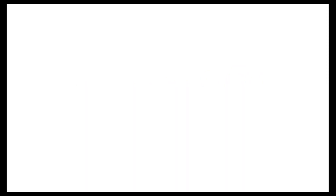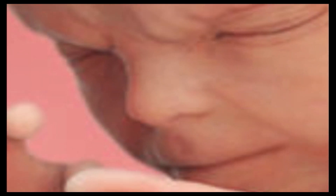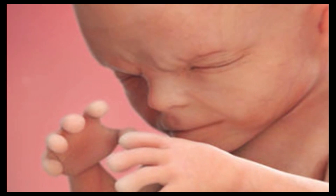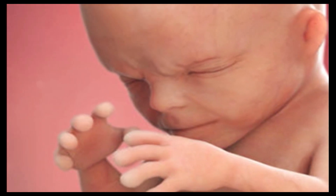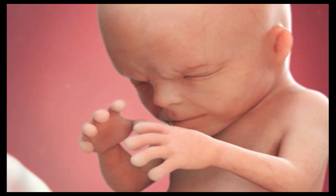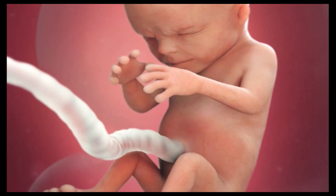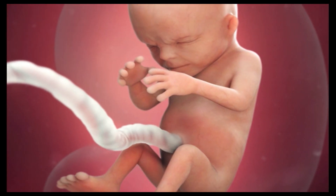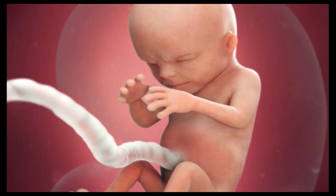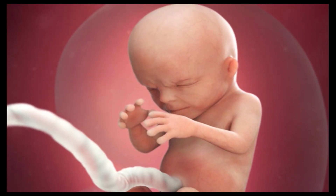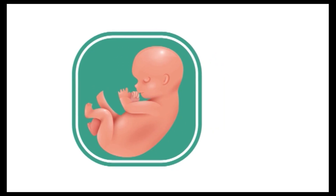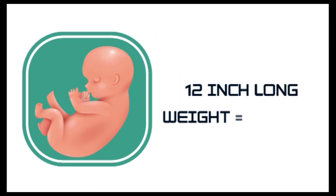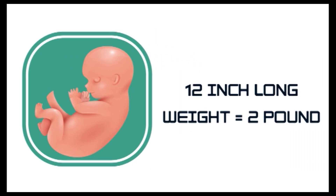Month 6: The eyelids begin to part and the eyes open. The baby responds to sound by moving or by increasing its pulse. By the end of month 6, the baby is 12 inches long and weighs about 2 pounds.